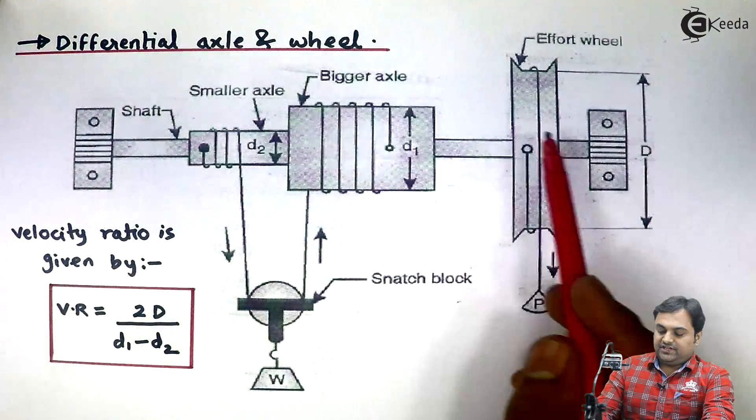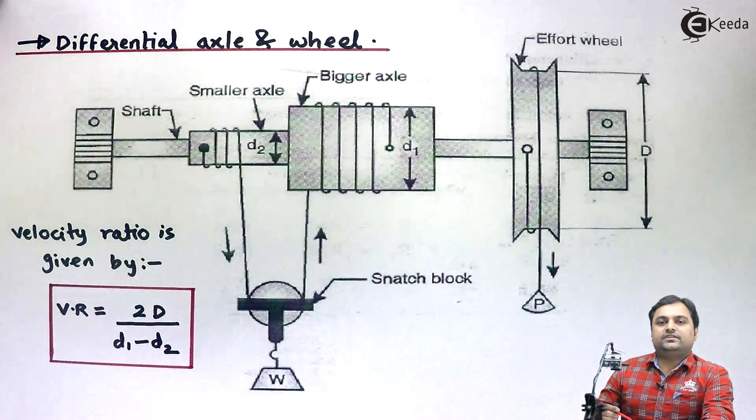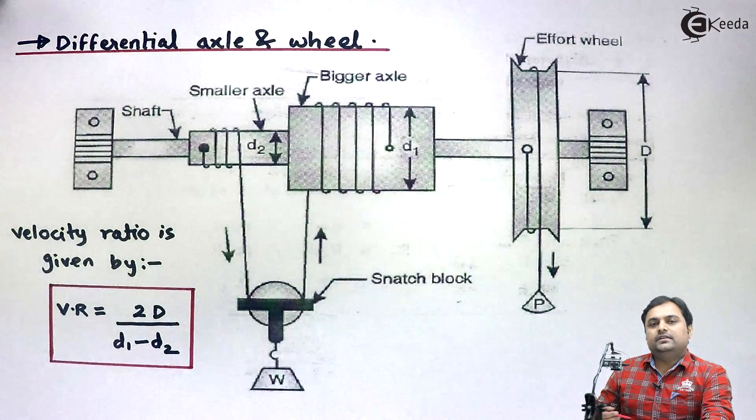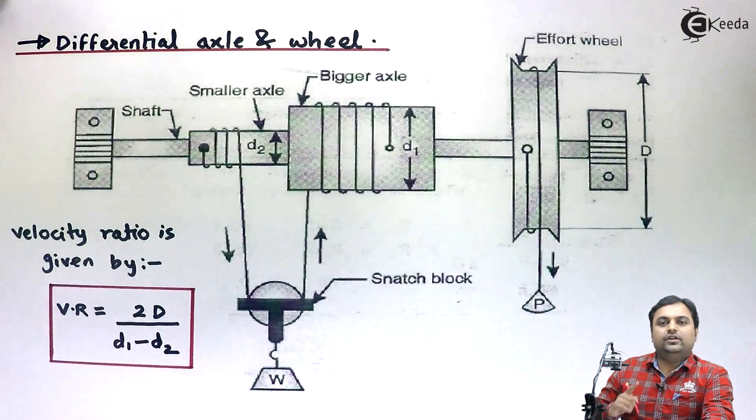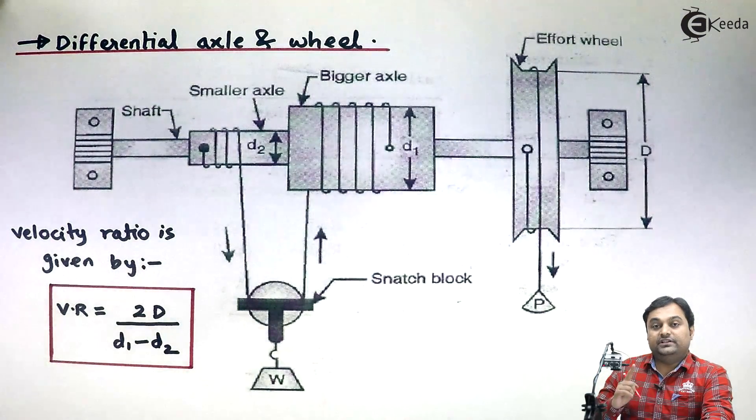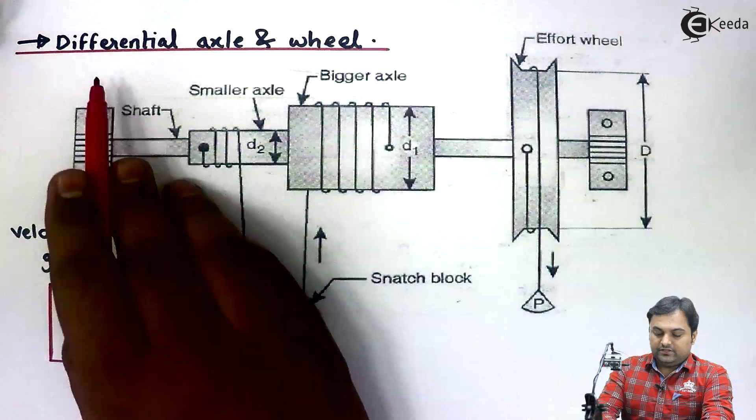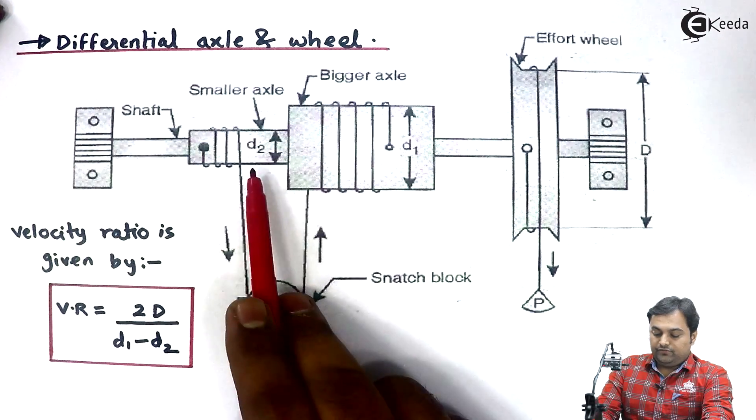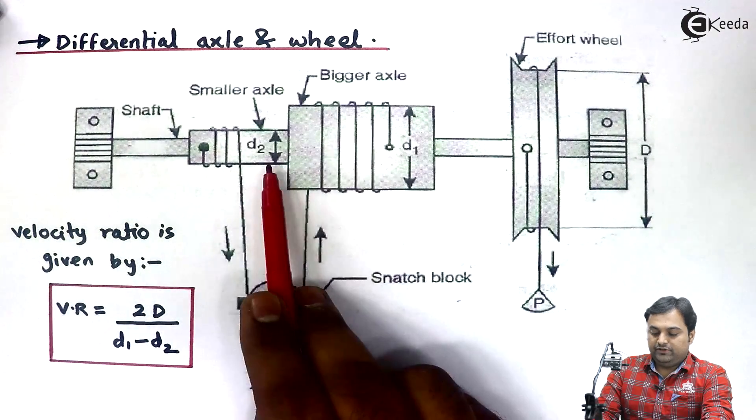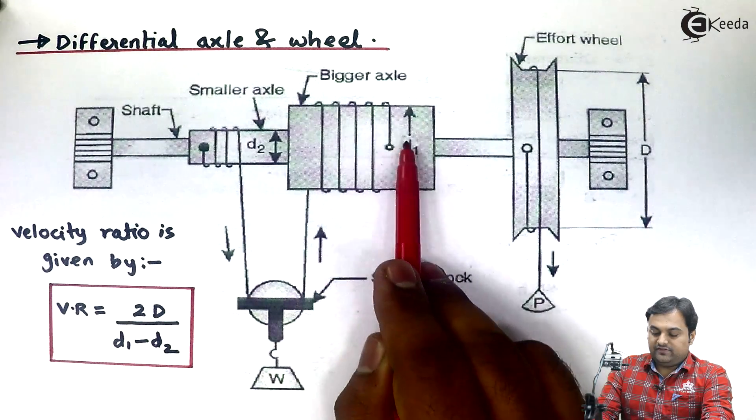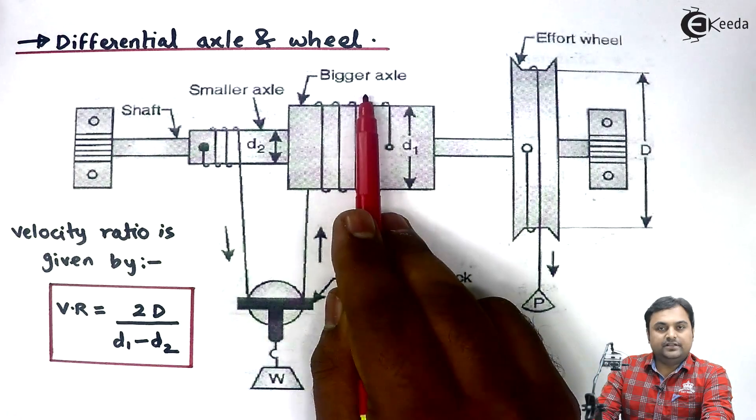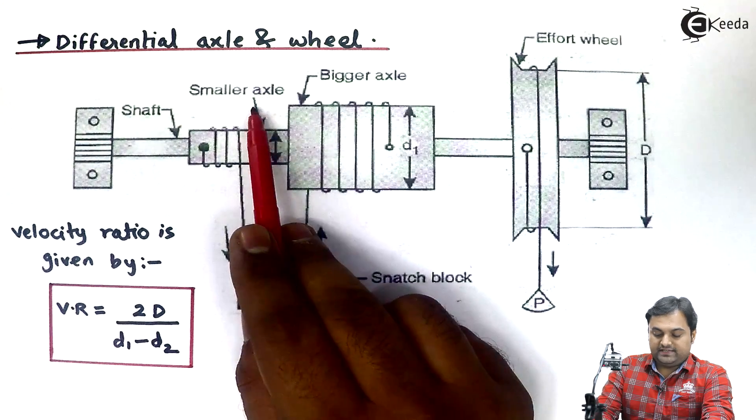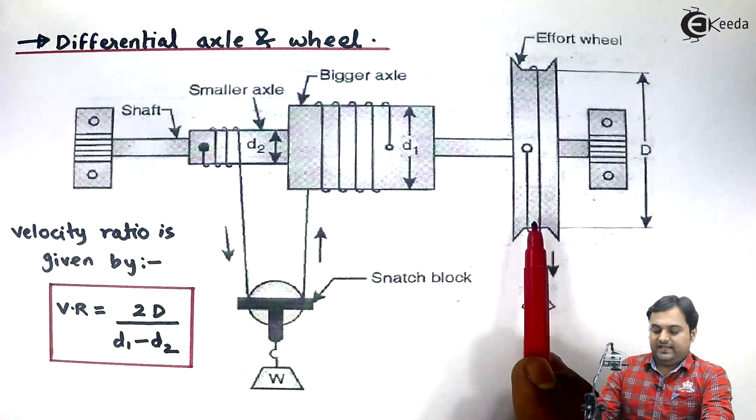Differential axle and wheel is a modification of simple axle and wheel. In simple axle and wheel we were having only one axle of only one diameter. Here in case of differential axle and wheel it is called differential because we have two different axles having two different diameters. One is having the bigger diameter called as the bigger axle. Other is called as the smaller axle because it has a smaller diameter.